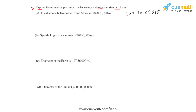To get a number into standard form, we will have to shift the position of the decimal. If the decimal is shifted towards left, the power of 10 gets added, and if the decimal is shifted towards right, the power of 10 gets subtracted. Going by this thumb rule, we will start solving each of the parts.